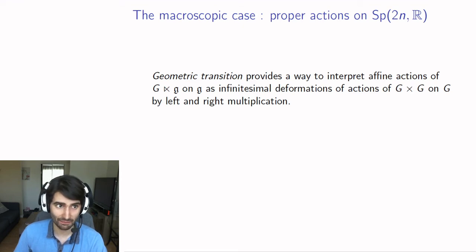In the title I talked about actions on sp2nR and SL2 algebra. I won't have time to say much, but there is a way to see the action, the affine action of g semi-direct product with its Lie algebra on its Lie algebra, as an infinitesimal version of the action of g cross g on g by left and right multiplication.